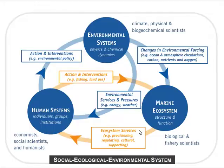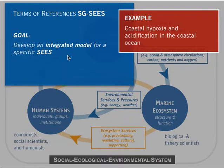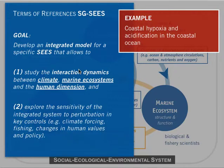The idea of the study group and its terms of reference would be to develop an integrated model for a specific social ecological environmental system. For example, we would target coastal hypoxia and acidification in the coastal ocean, and for this system we would study the interaction dynamics between climate, marine ecosystems, and the human dimensions, exploring the sensitivity of the integrated system to perturbations in key controls such as climate forcing, fishing, and changes in human values and policy.